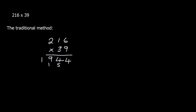Then we move on to the 3. Now we're not actually multiplying by 3 — this is actually 30. So what we do is we just add on an extra 0 here, and then work from right to left again. So 3 times 6 is 18: write 8, and 1 carries over. 3 times 1 is 3, plus 1 is 4. And 3 times 2 makes 6.